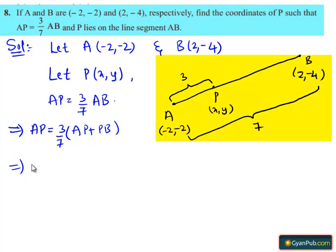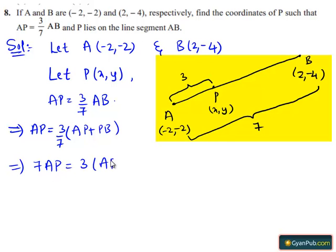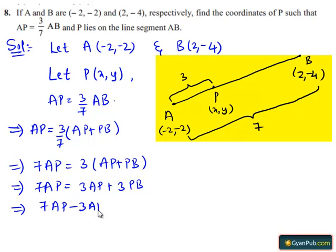This implies multiplying by 7 on both sides, we get 7AP equals 3 times (AP plus PB). This implies 7AP equals 3AP plus 3PB. This implies 7AP minus 3AP equals 3PB. This implies AP/PB equals 3/4.